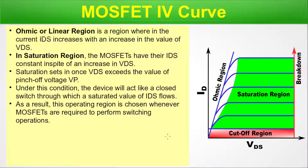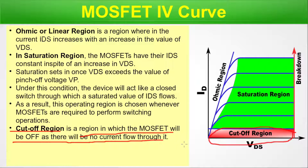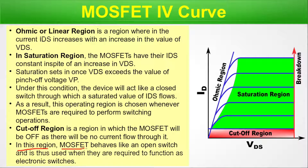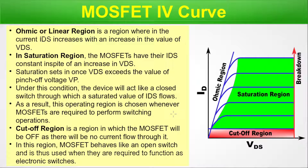The cutoff region is where the MOSFET will be off as there will be no current flowing through it — shown in red on the graph. In this region, the MOSFET behaves like an open switch, and is used when required to function as an electronic switch. So: open-switch operation is achieved from the cutoff region, and switching operation is achieved from the saturation region. This is how each region of the MOSFET IV curve contributes to digital logic operation.